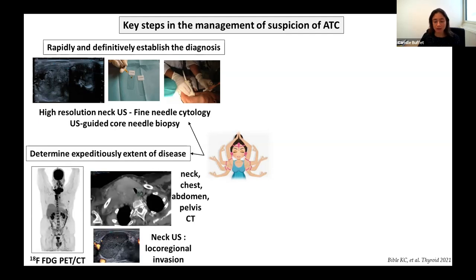You will also have to determine expeditiously the extent of disease with whole-body FDG PET-CT and CT of the neck, chest, abdomen, and pelvis, which are valuable in evaluating distant metastatic sites. Neck ultrasound and neck CT are also very useful to evaluate local-regional involvement of the trachea, esophagus, and central and lateral lymph node areas.